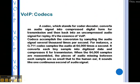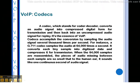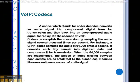VoIP Codecs: A codec, which stands for coder-decoder, converts an audio signal into compressed digital form for transmission and then back into an uncompressed audio signal for replay. Codecs accomplish the conversion by sampling the audio signal several thousand times per second. For instance, a G.711 codec samples the audio at 64,000 times per second. It converts each tiny sample into digitized data and compresses it for transmission. When the 64,000 samples are reassembled, the pieces of audio missing between each sample are so small that to the human ear, it sounds like one continuous second of audio signal.